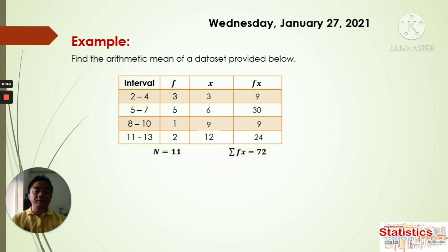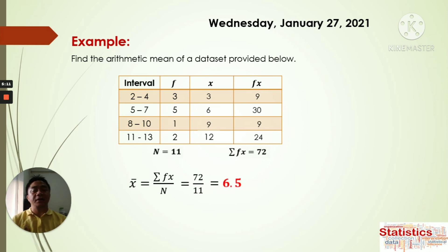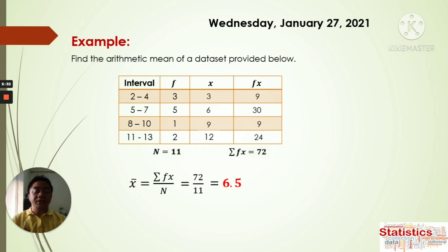Now we have the summation and the number of data collected, so we can apply them to our formula. x̄ is equal to sigma fx divided by n. Substituting the values: sigma fx is 72 and n is 11. We divide and get 6.5. So among all the frequencies — 3, 5, 1, and 2 — the average mean is 6.5. That is the average mean for this data collected.